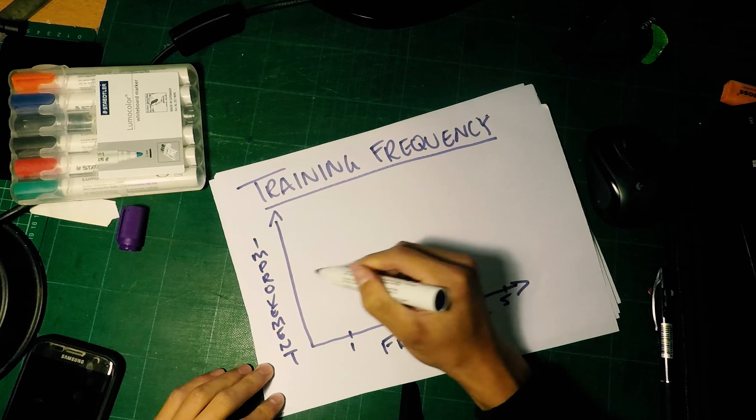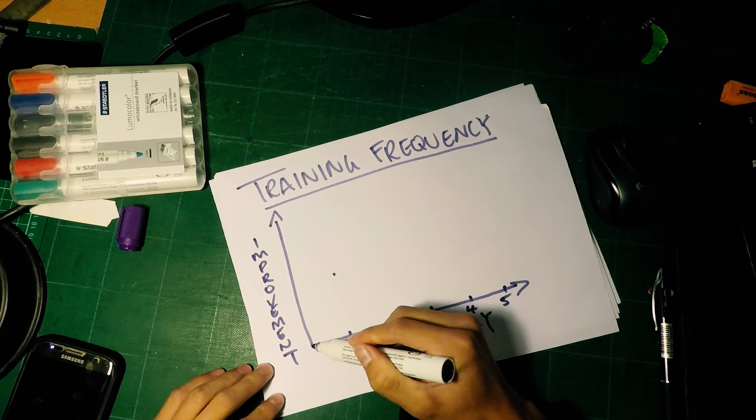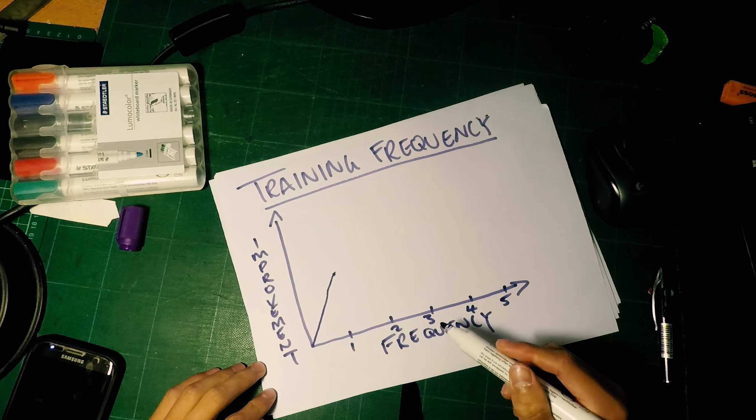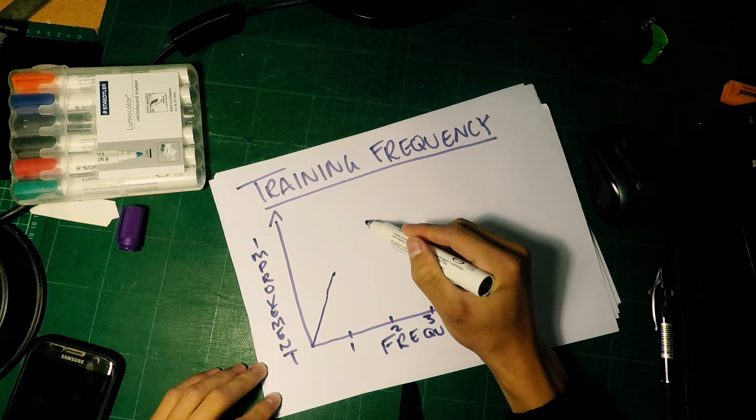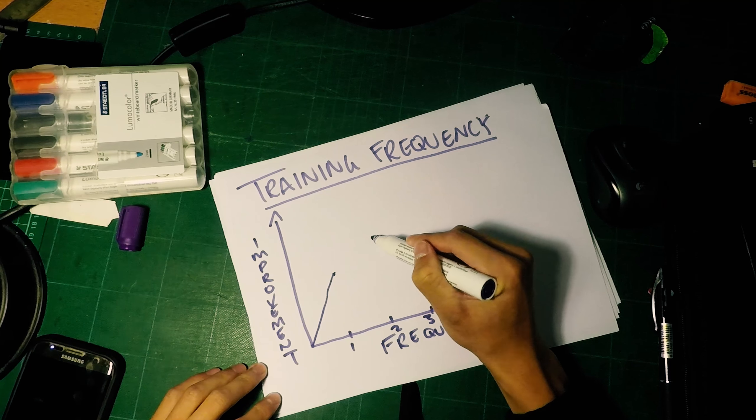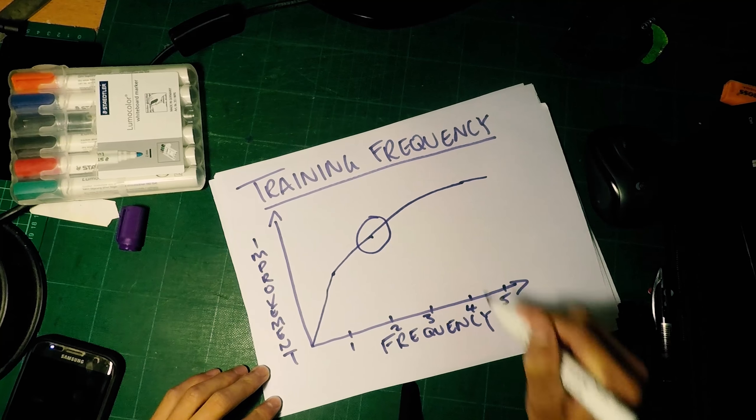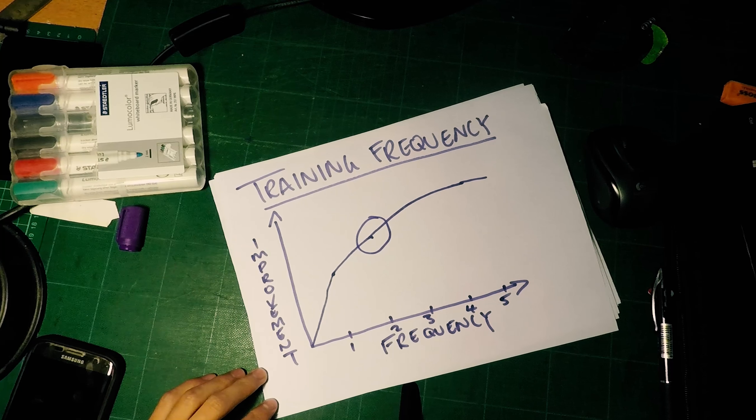The most improvements you're going to get is on the first session. So compared to zero sessions a week, if you just do one session weekly, you're probably going to get the most improvements. Then the second session, you'll get less improvements. And then the graph kind of goes like this—this is called the principle of diminishing returns.